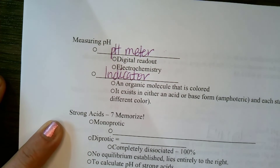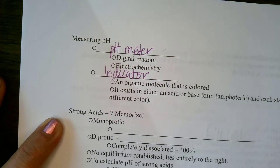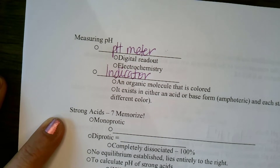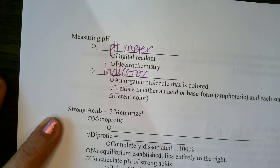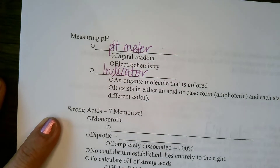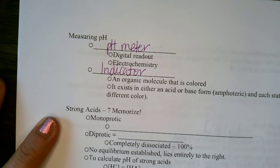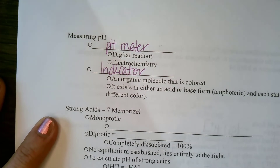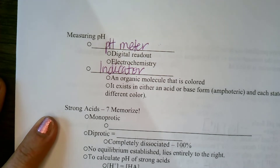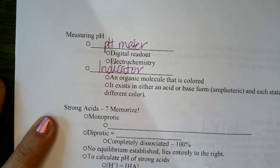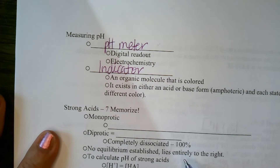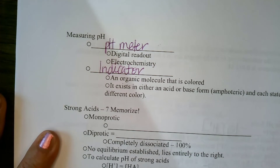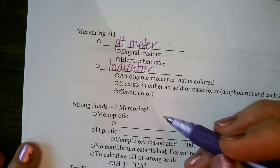When measuring the pH of solutions, we must consider whether we're dealing with strong acids or weak acids, strong or weak bases. Strong acids mean easy math — no equilibrium chart needed. Today's lesson focuses on strong acids; tomorrow covers weak acids and equilibrium problems. For strong acids, remember they 100% dissociate, so it's straightforward negative log.